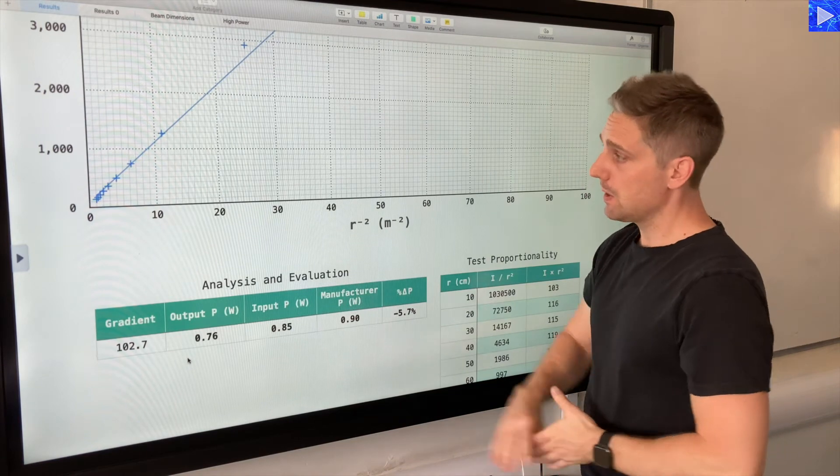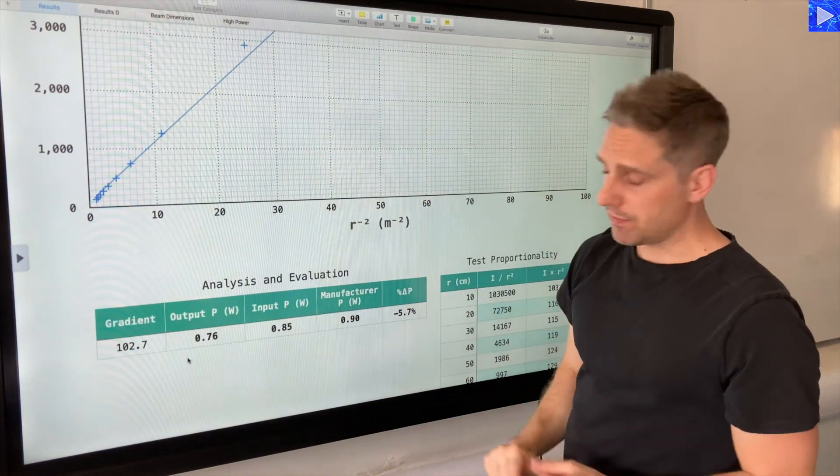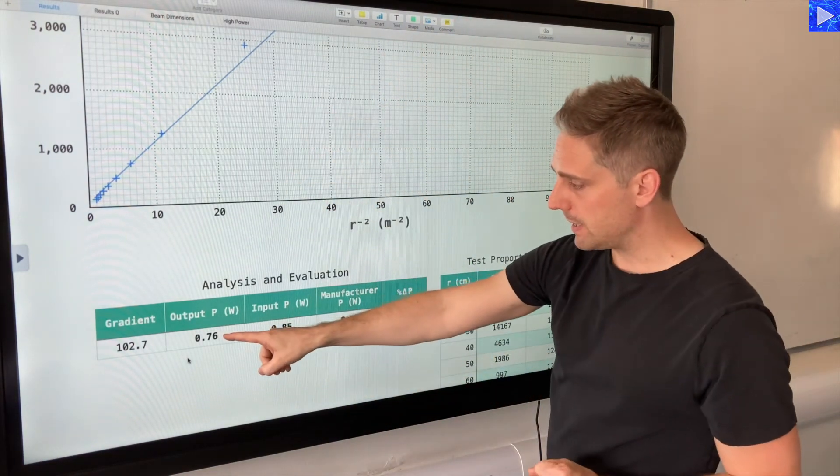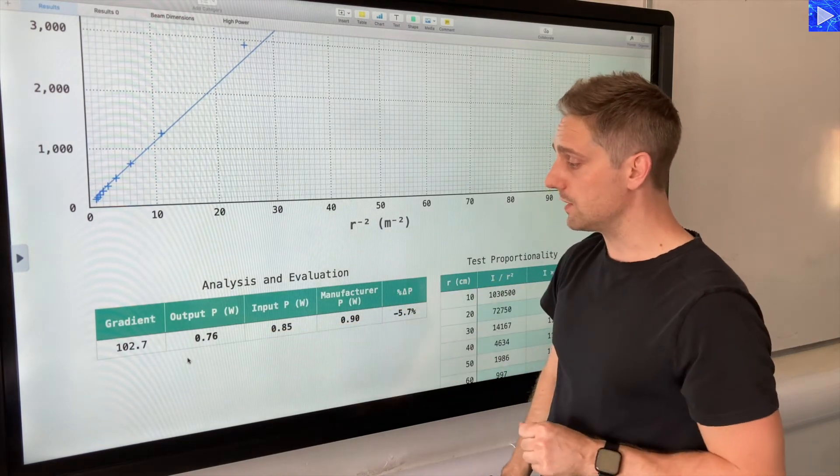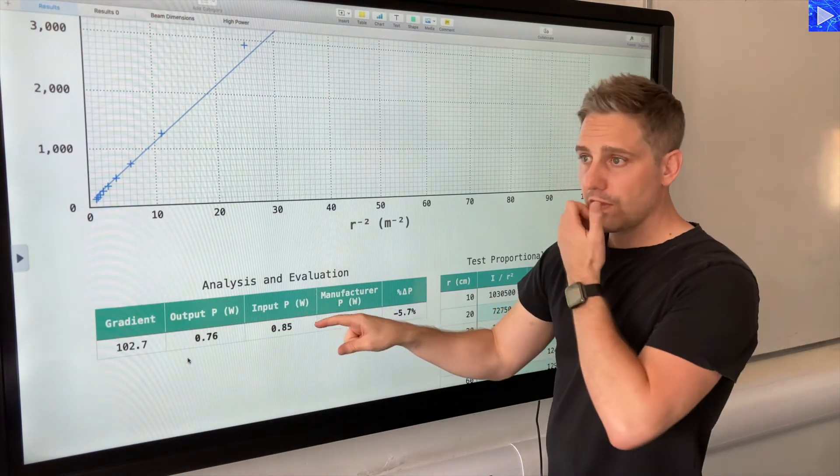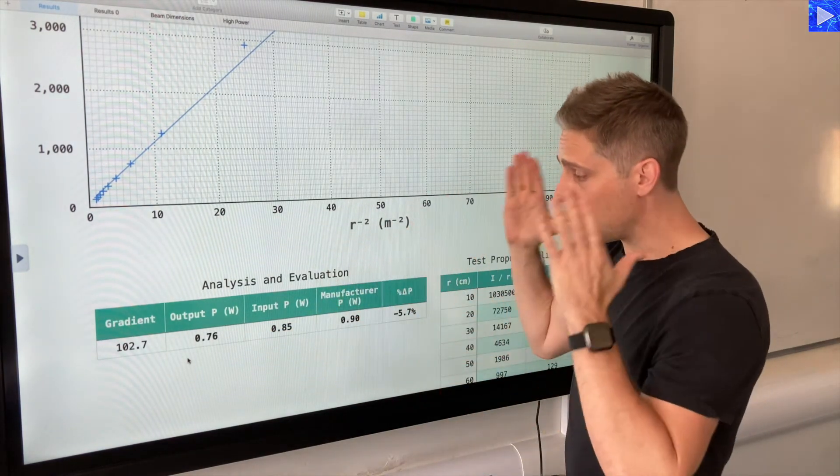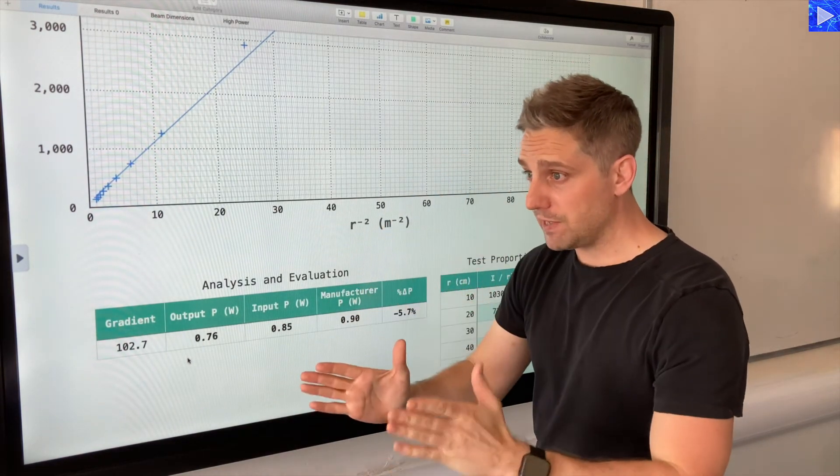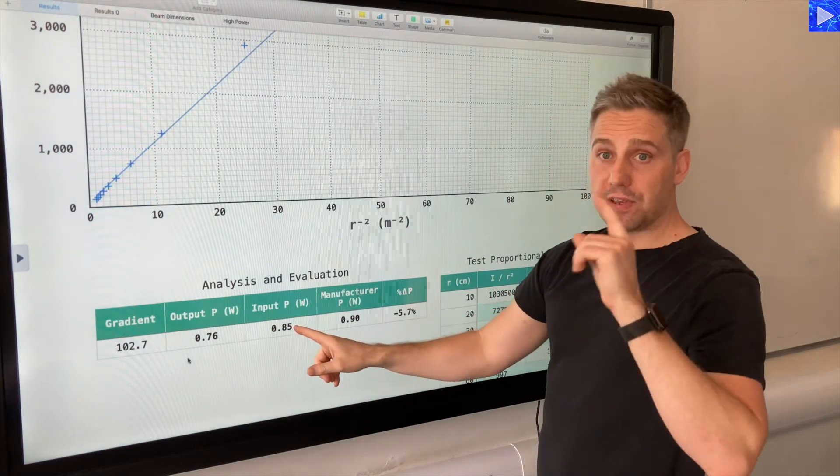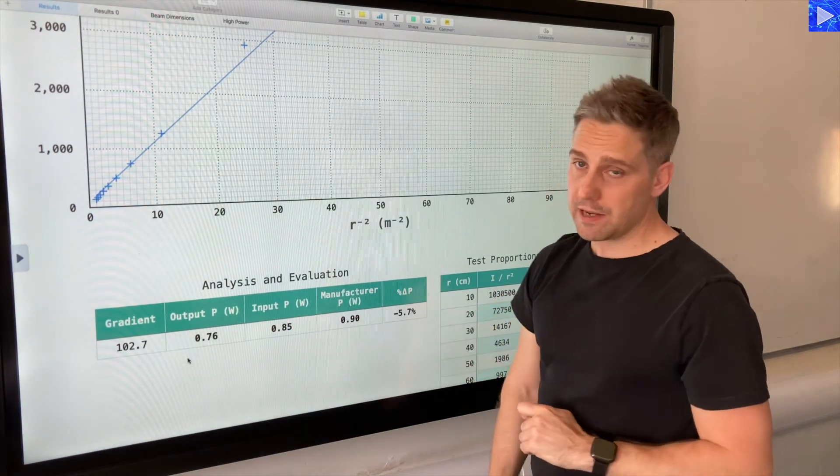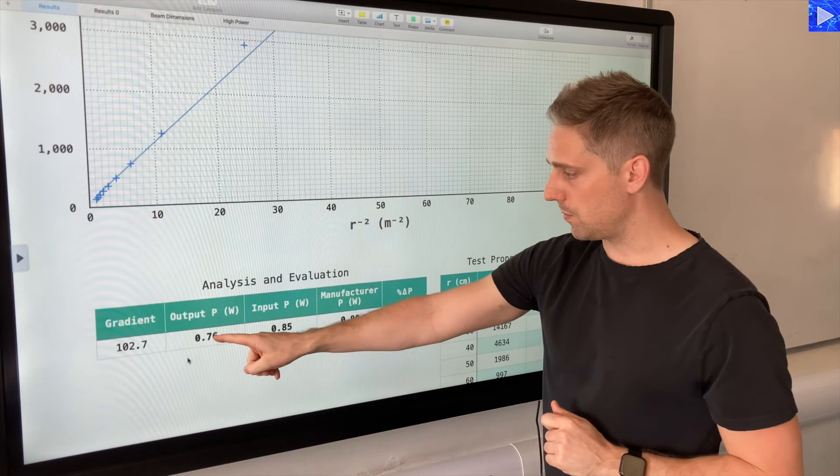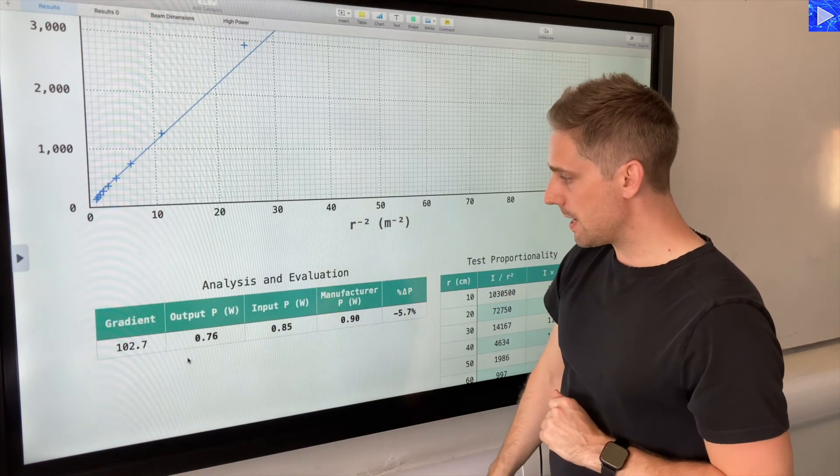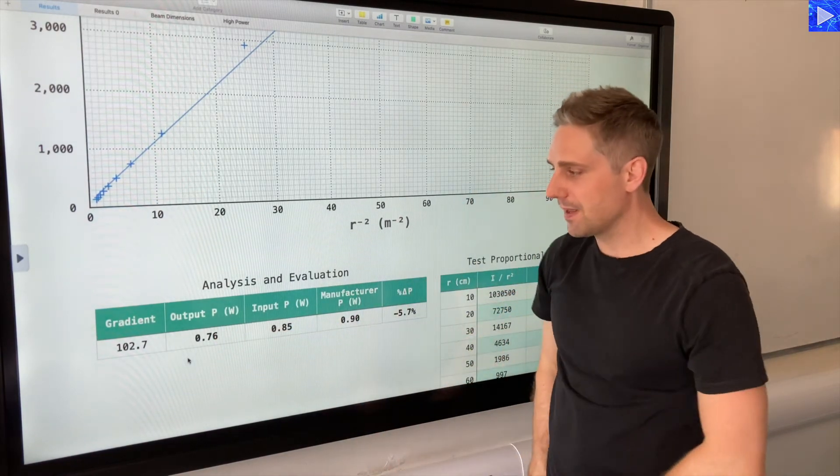So what that gave me is 0.76 output power. So this is the output power from the bulb at these distances on average. That's what that value represents, in watts, 0.76. Then what I did is the torch is powered by a battery, so I got the manufacturer power rating of the battery.